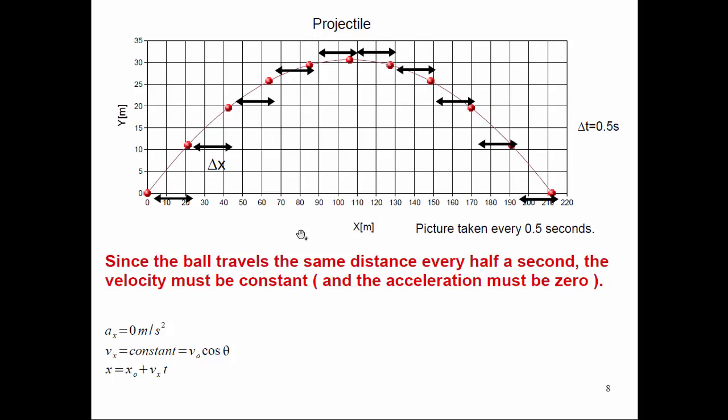The X velocity equals the initial X velocity, and the initial X velocity is just the initial velocity times the cosine of theta. So in the X direction, there's no acceleration, velocity is constant, and we can predict the position.